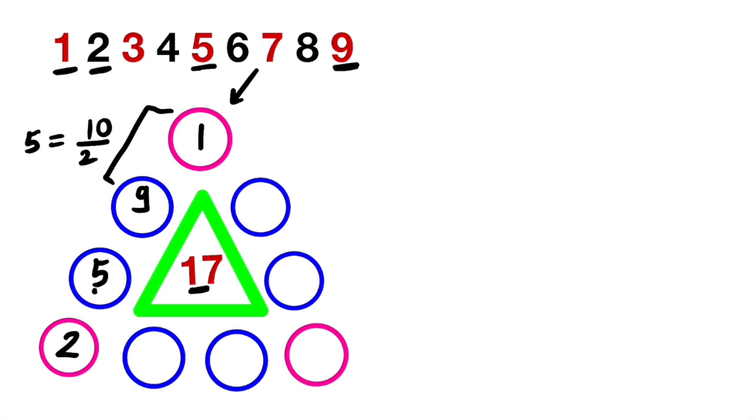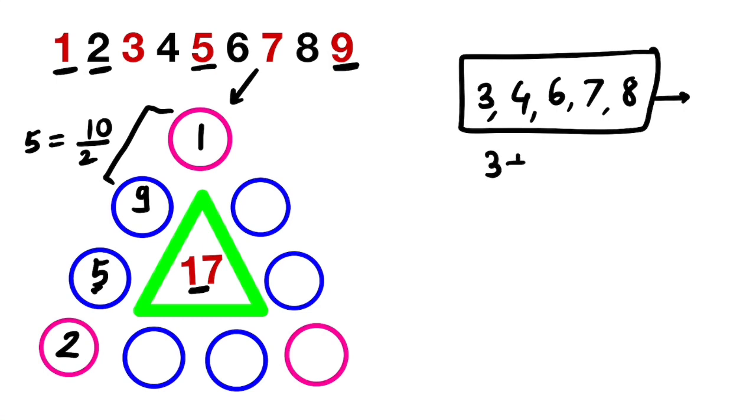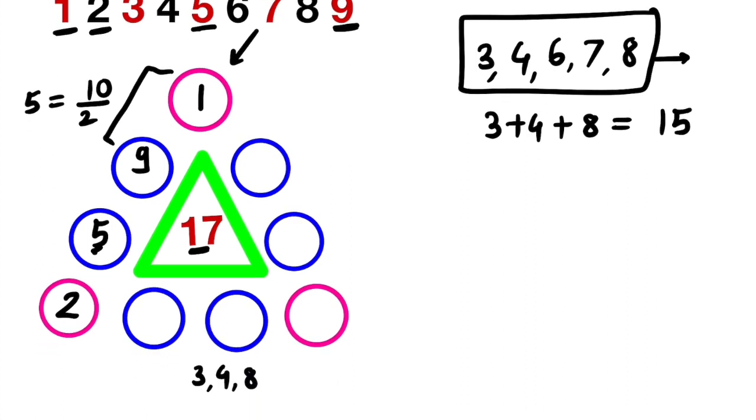We have 3, 4, 6, 7, and 8. So from these 5 digits we have to choose 3 such that their sum is 15. Clearly, 3 plus 4 plus 8 is equal to 15. So we have to place 3, 4, and 8 in this line, or in these 3 circles, but where to place—that is the question.